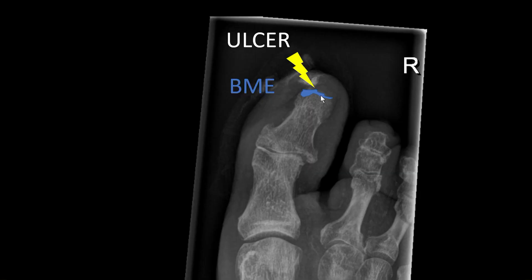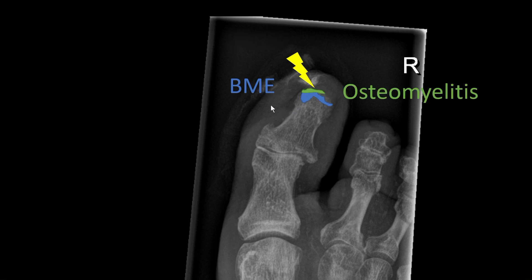Typically you have some kind of an ulcer or defect in the skin and subcutaneous tissue, and even a positive probe-to-bone test, and the clinician wants to rule out osteomyelitis. On conventional radiographs it might take up to 10 days, 2 weeks, or even longer until you can see changes of osteomyelitis. Therefore we frequently get an MRI for this question. The first thing you will notice on the bone is just some bone marrow edema at the region where the cutaneous defect is.